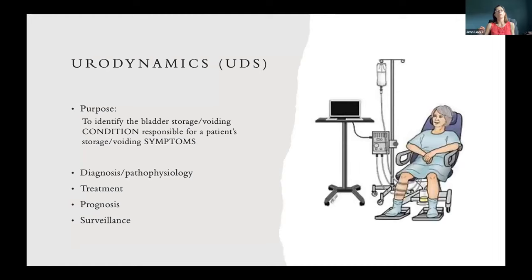We do a study in urology called urodynamics. In this study, we place catheters in the bladder and the rectum and measure the abdominal pressure from the rectum and the bladder pressure from the urethral catheter. When we subtract these, you can see how much the detrusor or the muscle of the bladder is contracting. The purpose of this study is to identify bladder storage and voiding conditions responsible for patients' symptoms. It's helpful in the diagnosis, pathophysiology, treatment, prognosis, and surveillance of patients with this and other diseases.